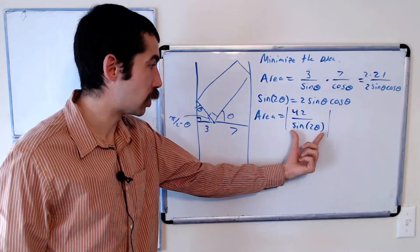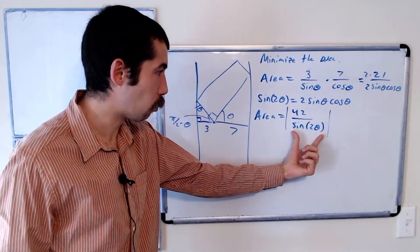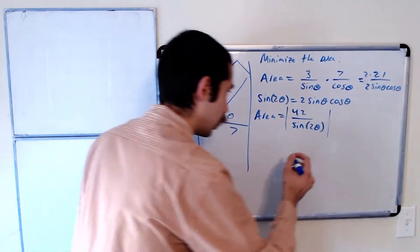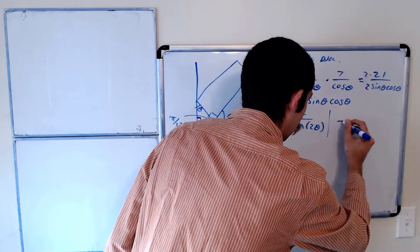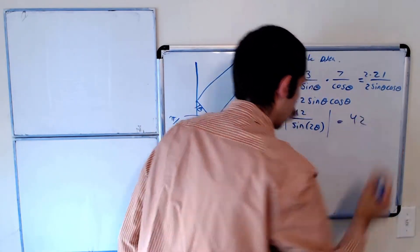So if sine of 2 theta is 1, that gives us our area. Our minimum area is 42.